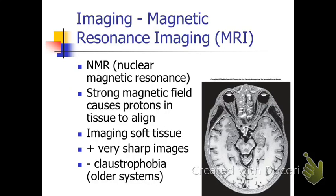If you want to look at soft tissue, you want an MRI. An MRI is great for looking at brain matter, joint spaces, tendons, and ligaments. It uses a magnetic field that causes protons to realign in the tissues — extremely sharp. With computer enhancements you get many thin sections through the body. Older systems were claustrophobic tube-like, but now we have open MRI, so that's no longer really an issue.